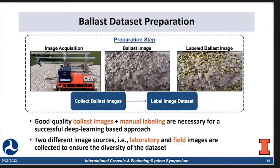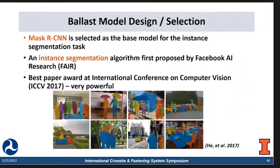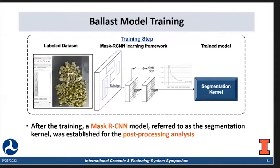That covers the vehicle development. Now moving to the algorithm development. As a first stage for any deep learning algorithm, we always prepare a task-specific database. We collect lab and field images from different sources and manually label them to provide ground truth information for the model to train on. Then we select our base model for the image segmentation task. We select Mask R-CNN as our base model, which is a very advanced instance segmentation algorithm proposed by Facebook Research FAIR, and it is very powerful.